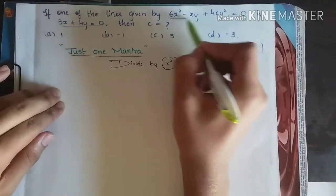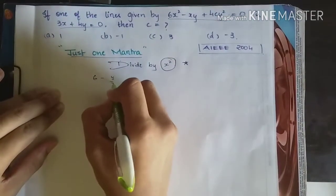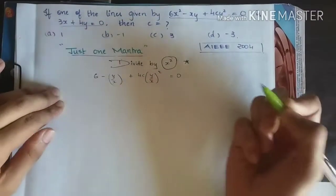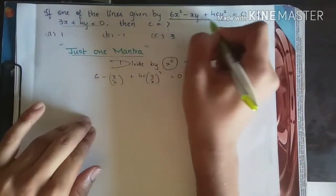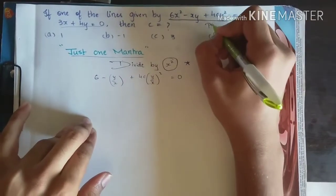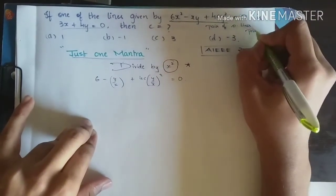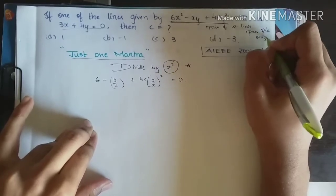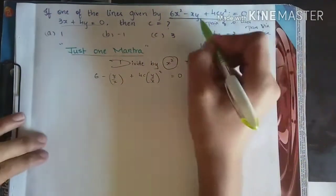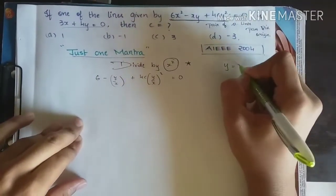Let's divide by x square. So we will get 6 minus xy by x square is y by x. So y by x plus 4cy into y by x whole square equal to 0. Before I proceed, let me tell you one thing. This is of the form Ax square plus 2hxy plus by square equal to 0. This represents pair of straight lines and especially they pass through origin. So this is the condition if it is in this form. If there are any other terms, then they do not pass through origin. But in this case, they do pass through origin. So that helps us. So any line which passes through origin will be of the form y is equal to mx.